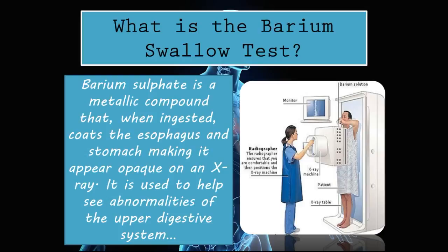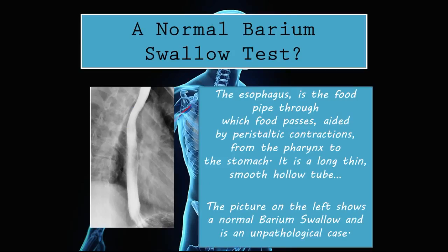It is a very helpful diagnostic tool indeed. So before we get into the pathological barium swallow tests, what does a normal barium swallow test look like? The esophagus is the food pipe through which food passes, aided by peristaltic contractions, from the pharynx to the stomach. It is a long, thin, smooth, hollow tube. The picture on the left shows a normal barium swallow — an unpathological case. Basically the esophagus is like a garden hose through which food passes from the oral cavity down into the stomach.